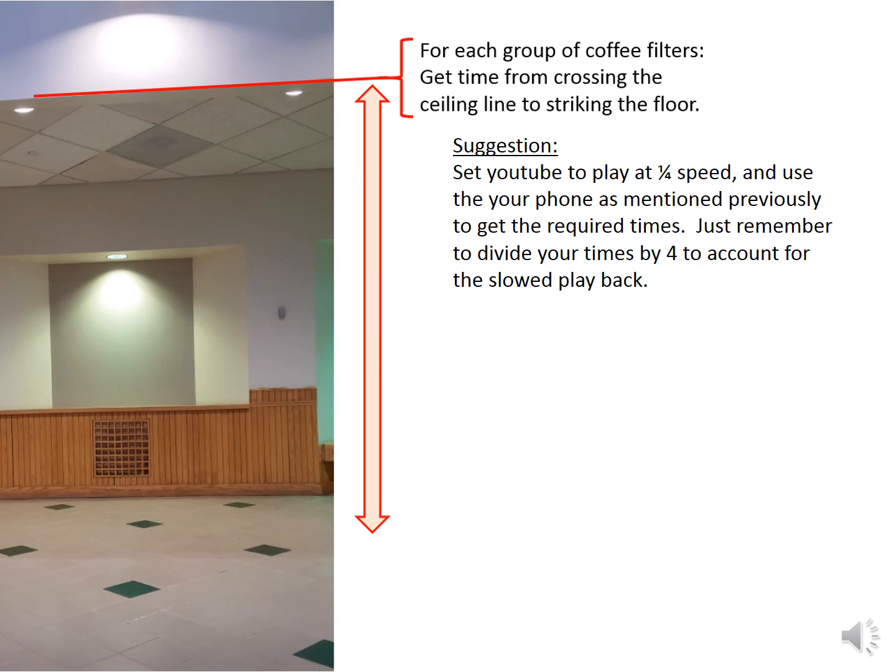Now it is a little difficult to get the times as objects are falling. So I suggest you set the YouTube to play at a quarter speed. And then with your phone, depending on how you do it, you can use the lap timer.